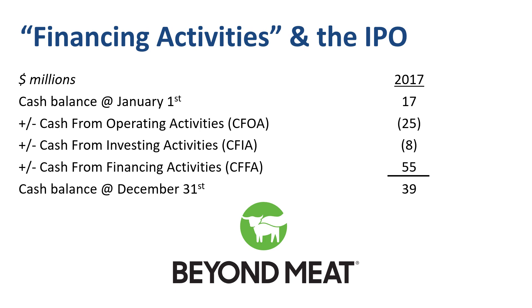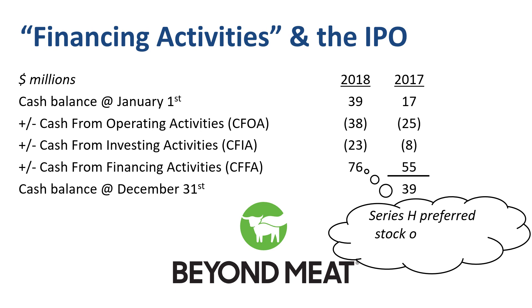The ending balance of 2017 of $39 million is the same as the opening balance of 2018. Continued losses and a very dramatic expansion of working capital led to a cash outflow from operating activities of $38 million. Heavier investing in property, plant, and equipment led to a cash outflow of $23 million from investing activities. Same story as 2017 — a $76 million cash inflow was needed from financing activities, through a Series H preferred stock offering and various types of borrowing, bringing the cash balance at year end to $54 million.